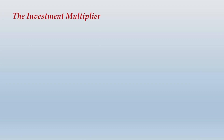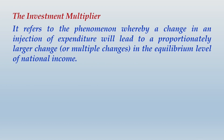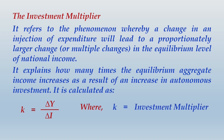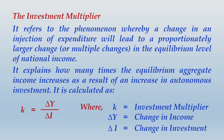The investment multiplier refers to the phenomenon whereby a change in an injection of expenditure will lead to a proportionately larger change in the equilibrium level of national income. It explains how many times the equilibrium aggregate income increases as a result of an increase in autonomous investment. It is calculated as K = ΔY / ΔI, where K is the investment multiplier, ΔY is the change in income, and ΔI is the change in investment.